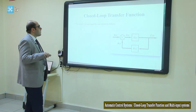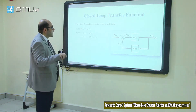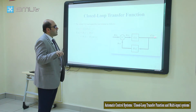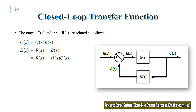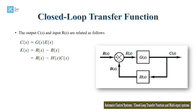We can write that the output of a system — I'm talking about a single block — will be equal to G(s), the gain of this block, times E(s), the input of this block. So C(s) is equal to G(s) times E(s).